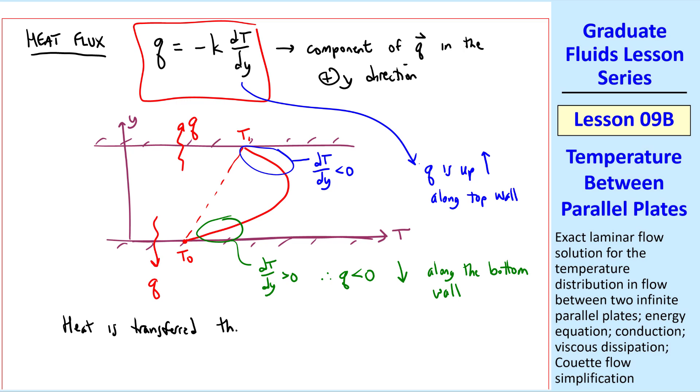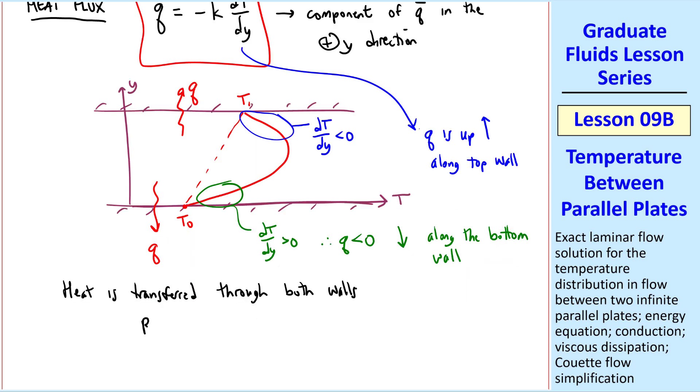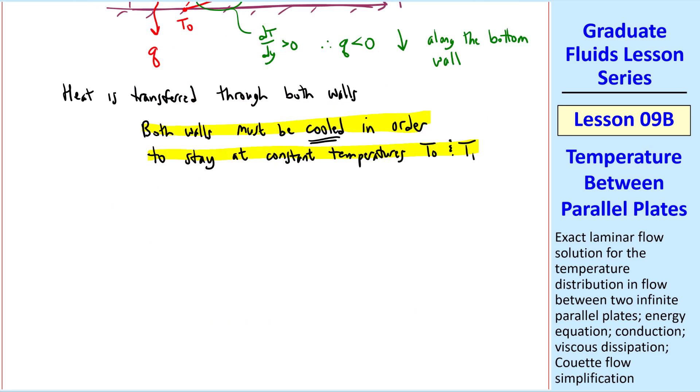Heat is transferred through both walls. We conclude that both walls must be cooled in order to stay at constant temperatures, T0 and T1, since these two temperatures are prescribed. Thus, the answer to our question is that heat must transfer from the fluid into both walls, enabling this temperature profile to be fully developed. In other words, T is a function of y only.